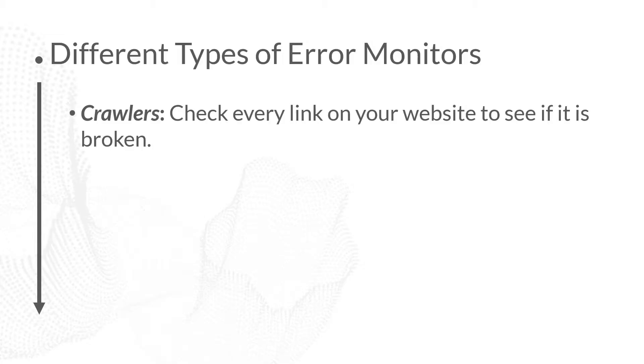Now that we've talked through some of the considerations for these different tools, let's talk about the four different types of error monitoring tools that are out there. The first is crawlers. Crawlers check every link on your website to see if it's broken. These focus on your website — you launch a crawler, and it goes through all the pages, all the links, everything on your website to see if any of those links or pages are broken.